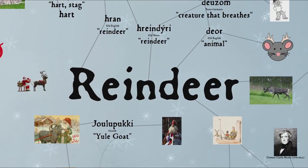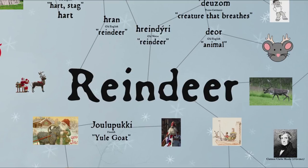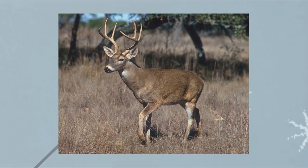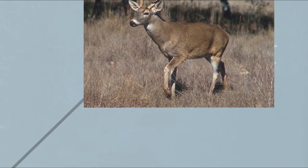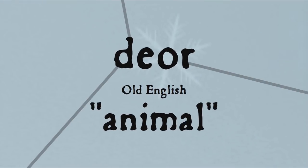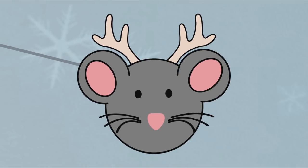Let's start with the word reindeer itself. The second element is simple enough, right? A deer is a member of the family Cervidae, a type of ruminant mammal. Except the word deer didn't always refer to that animal. The Old English form of the word is deor and could be used to refer to any sort of animal. This use may have even survived into early modern English, as in the line from Shakespeare's King Lear: 'mice and rats and other such small deer.'